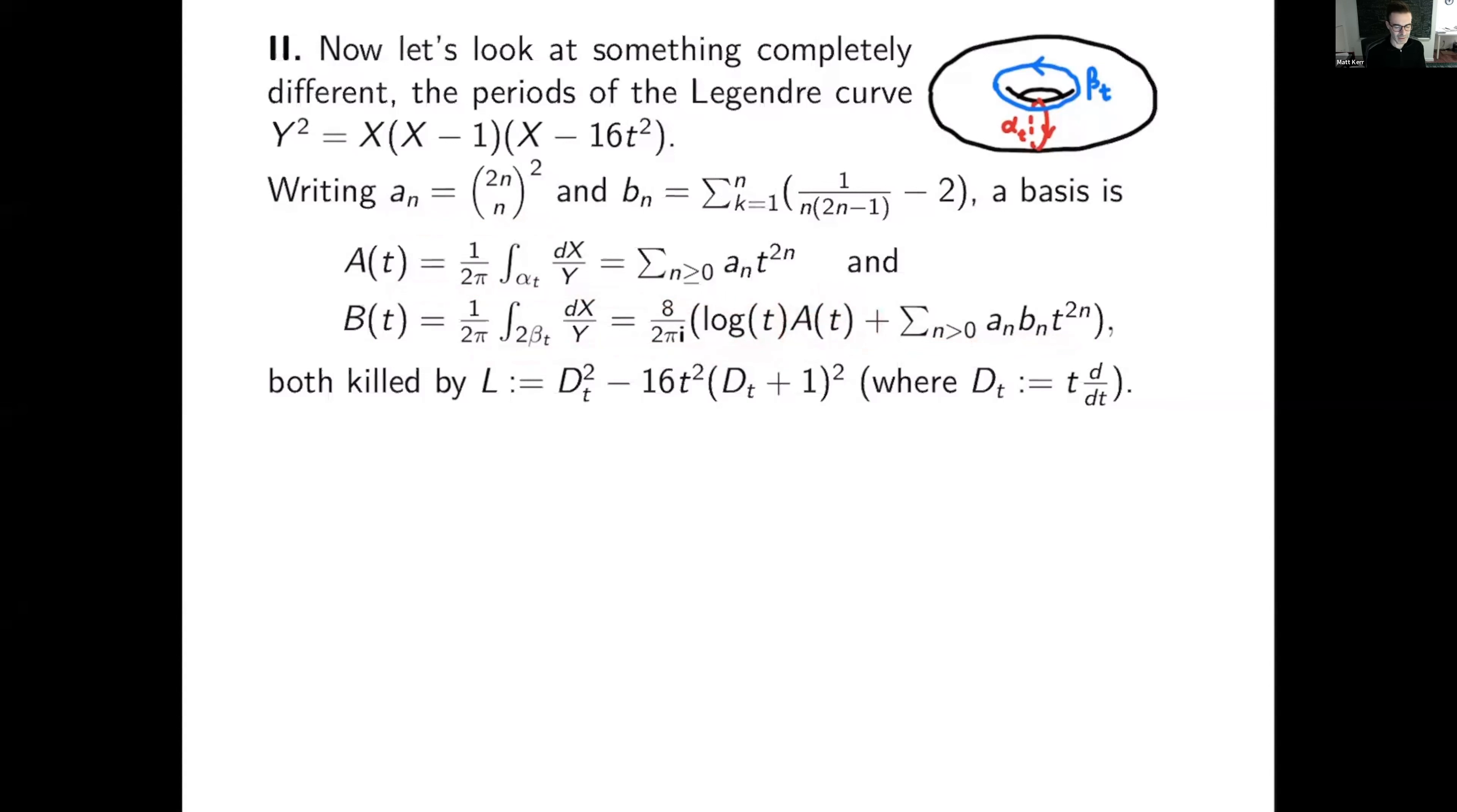And you might wonder why there's an eight here, well, I'm really using twice beta t. So this is an integral basis, but it's an integral basis for something else, which will come later. Okay. So those are the two periods. That's the basis for different solutions of this Picard-Fuchs operator.